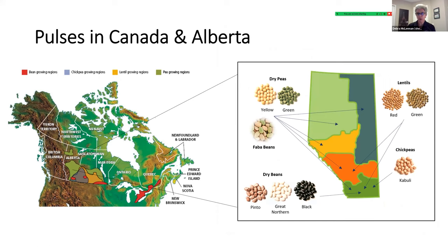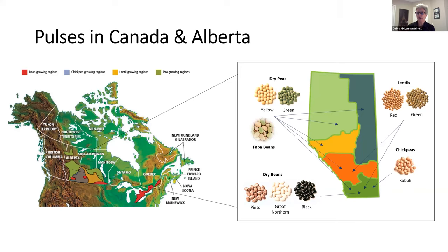We grow a significant number of pulses within our province. In Canada, they're grown primarily across the prairies — Alberta, Saskatchewan, Manitoba, and Ontario, with some in Quebec. Within the province of Alberta, we're divided into growing zones based on climate and soil conditions. Dry peas, both green and yellow, will grow in every zone within our province, as far north as Fairview, Alberta, right down to the United States border.